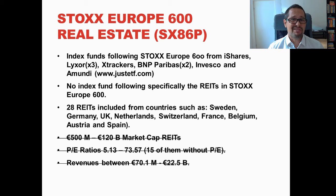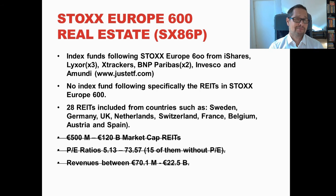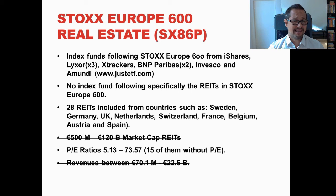I looked at the STOXX Europe 600, which is like the S&P 500 for Europe — an index containing 600 different titles from Europe. Within it is a real estate section. There are nine index funds tracking the STOXX Europe 600 from providers including Lyxor, X-trackers, BNP Paribas, Invesco, and Amundi, according to JustETF.com. However, there is none that specifically tracks just the real estate component within the STOXX Europe 600.